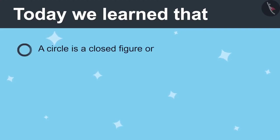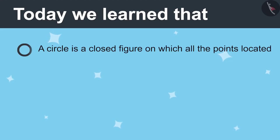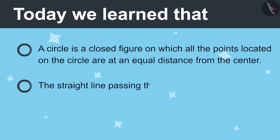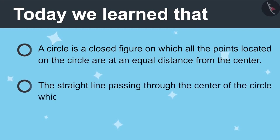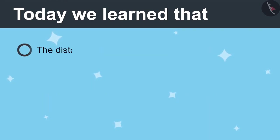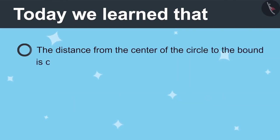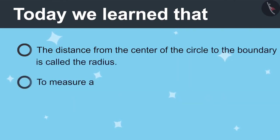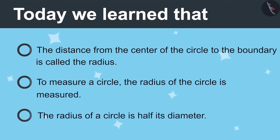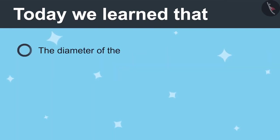Today we learned: a circle is a closed figure in which all the points are at the same distance from the center. The straight line passing through the center of the circle which meets both sides of the circle is called the diameter. The distance from the center of the circle to the boundary is called radius. To measure a circle, the radius is measured. The radius of a circle is half its diameter. The diameter of a circle is twice its radius.